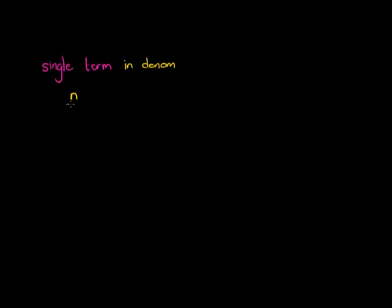We are going to work with two types: a single surd term in the denominator, or two terms in the denominator. Let's first look at a single term in the denominator — where the denominator is a surd, some sort of root that does not simplify to a rational number.